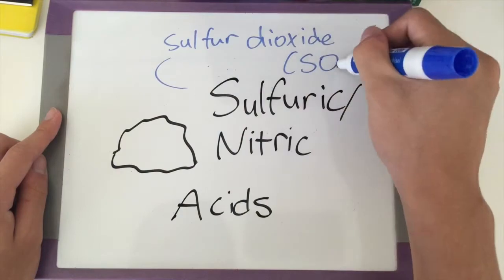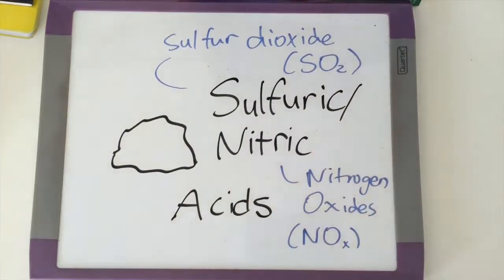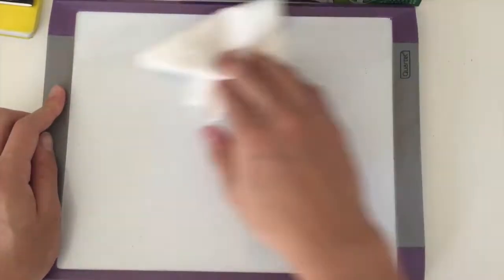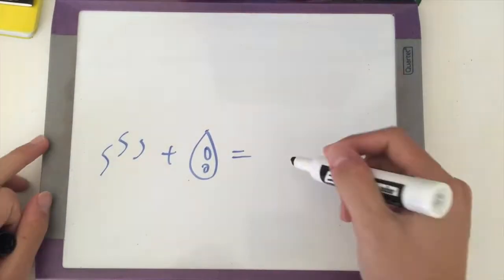When sulfur dioxide and nitrogen oxides are released into the atmosphere, they react with other chemicals such as water and oxygen to form sulfuric and nitric acids.